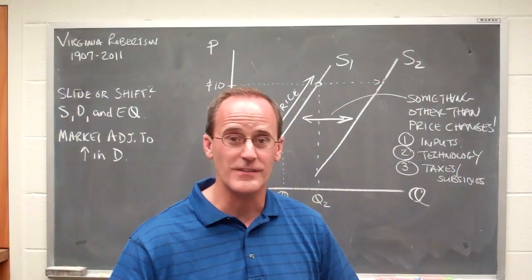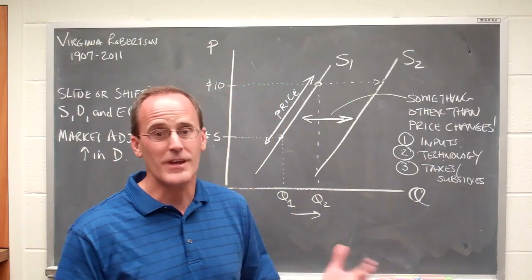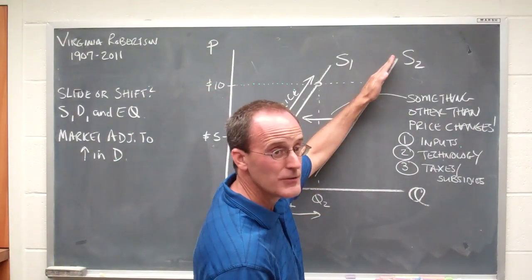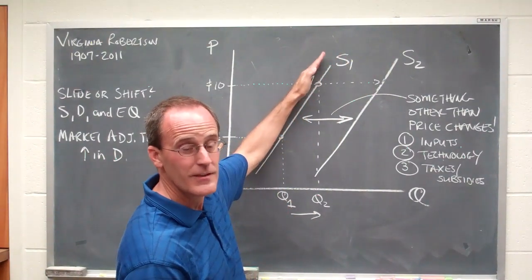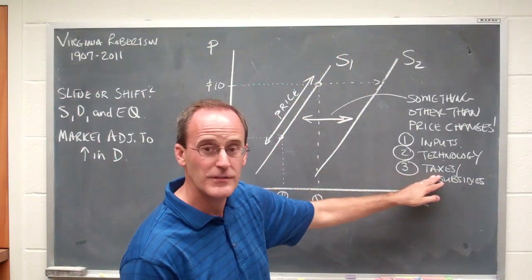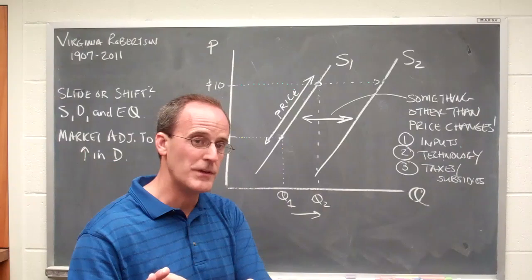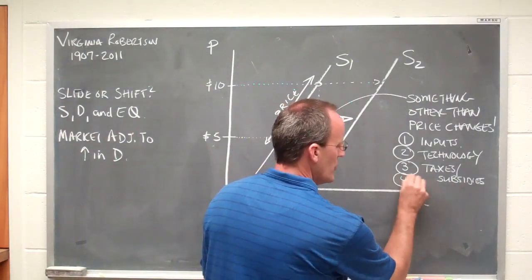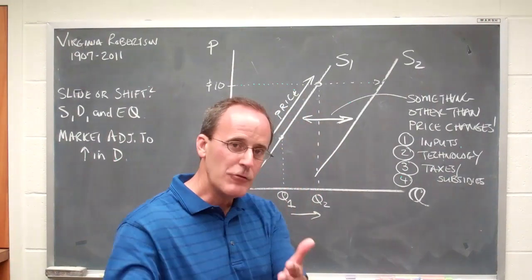On the other hand, if you're a business and you're getting hit with a high capital gains tax or corporate profit tax, your supply or willingness to produce the good probably gets shifted back to the left. So taxes and subsidies can play a big role in the decisions of businesses and their willingness to supply the good. Here's our fourth point to think about. That would be expectations.